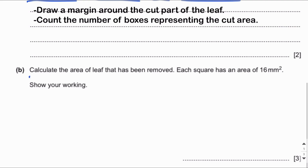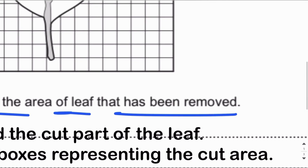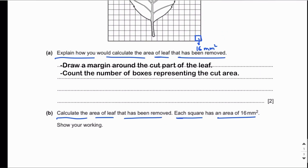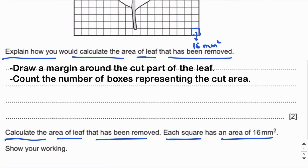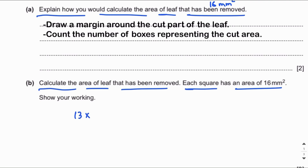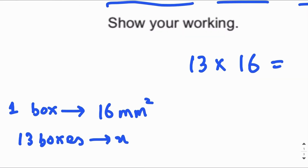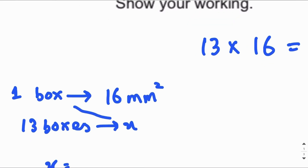Each square has an area of 16 mm². We already counted 13 boxes, so we simply multiply 13 by 16, because one box has an area of 16 mm². With a total of 13 boxes, the area equals 16 × 13.